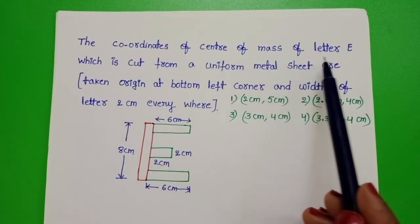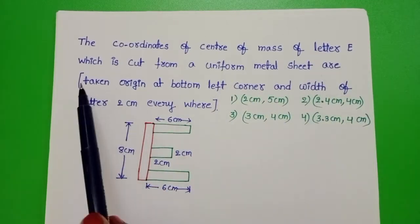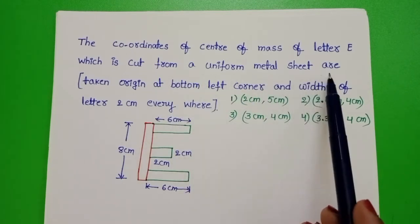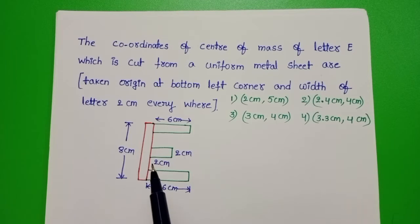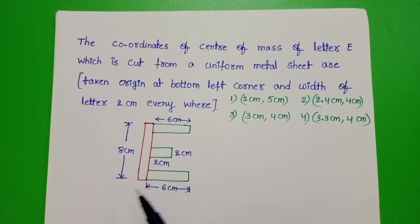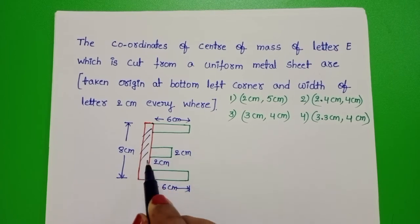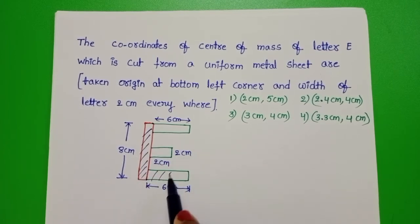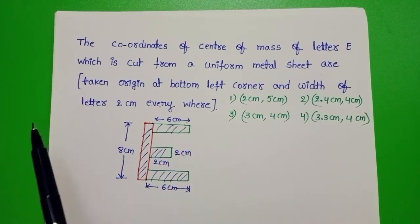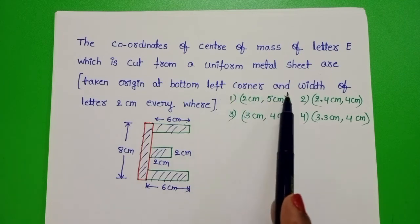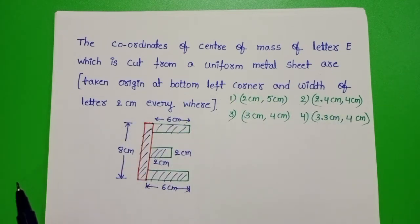The coordinates of center of mass of letter E which is cut from a uniform metal sheet. This given letter is cut from a uniform metal sheet, that means mass is distributed uniformly throughout this letter. To find out the position of center of mass, first divide this letter into 4 different parts. This is first part, second part, third part, and this is fourth part. Also take an origin at bottom left corner and width of the letter is 2 cm everywhere.